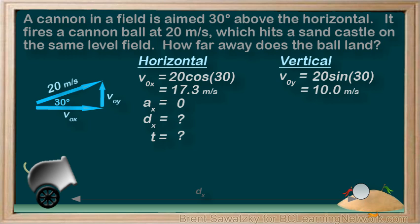The acceleration, Ay, in the vertical direction would be minus 9.8 meters per second squared. Again, this is due to gravity, and it's pulling the ball down in the negative direction. The displacement, dy, in this case, well, the castle is on the same vertical level as the cannon. They're both in a level field.